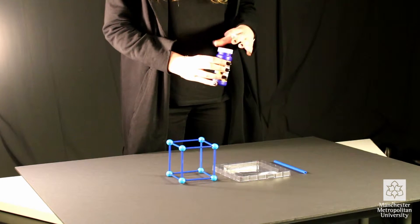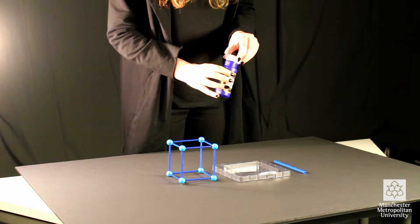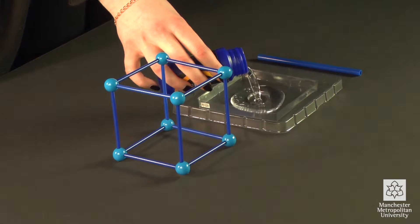For this method, pour the bubble solution into the tray. Move the cube around so all the sides get coated with the mixture.